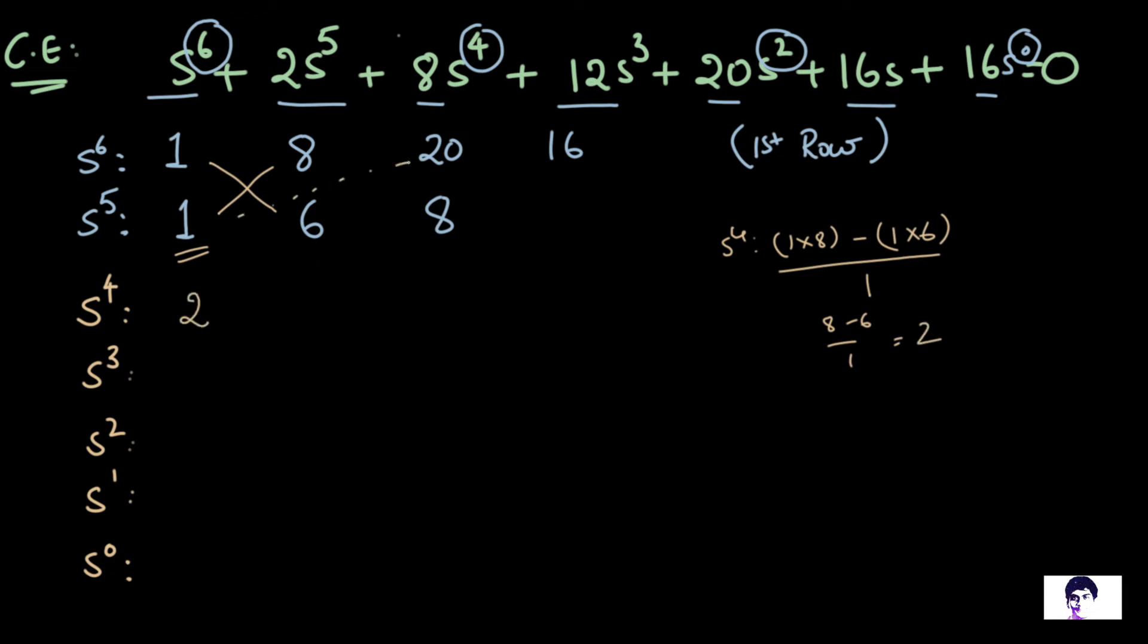For the second element, we multiply 1 into 20 minus 1 into 8 by 1, which is 20 minus 8 by 1, which is 12. So one thing that a common mistake that is done is people multiply 6 into 20 minus 8 into 8. That is wrong. The multiplication always happens from the first column. And finally, for the third element, I have 1 into 16 minus 1 into, I can assume there is a 0 in the last element of S^5. So that would be 1 into 16 minus 0 by 1, which is 16.